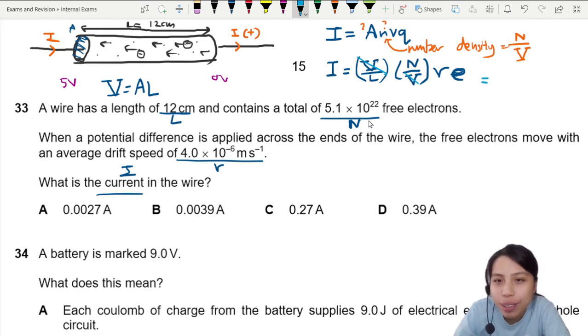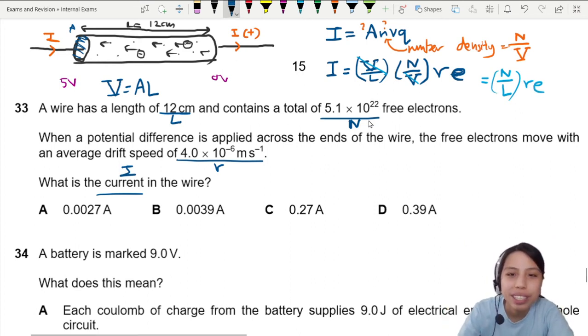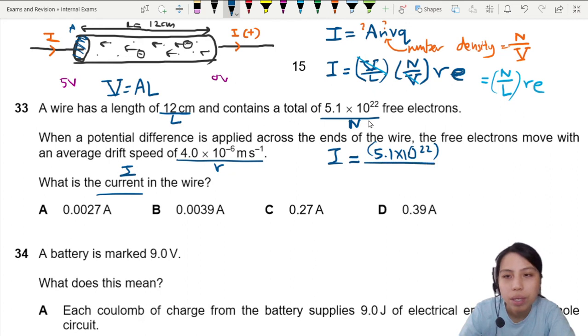So I have an equation where N over L times drift velocity times e. We have enough information now. Celebration! Let's plug it in. So I equals to number of free electrons, 5.1 times 10^22 over length 0.12 meters.